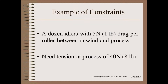The world is full of constraints. One of them is that your machine will likely have idler rollers. In this example, we will have 12 idlers with 5 newtons of drag each. We may be running a light web. In this example, we will assume that we need a tension of 40 newtons entering a fussy process, such as perhaps a laminator nip as shown here.